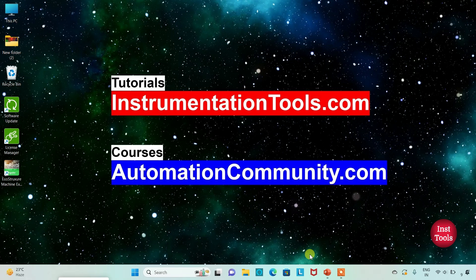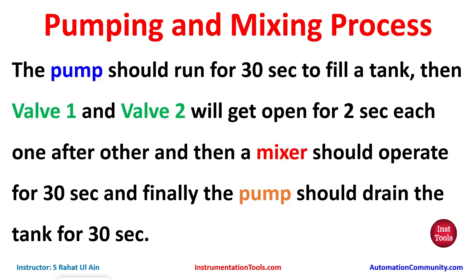Hello friends, welcome to Automation Community. Today in this video we are going to discuss an example on automatic pumping and mixing process. The pump should run for 30 seconds to fill the tank, then valve 1 and valve 2 will get open for 2 seconds each one after the other, then the mixer should operate for 30 seconds, and finally the pump should drain for 30 seconds.